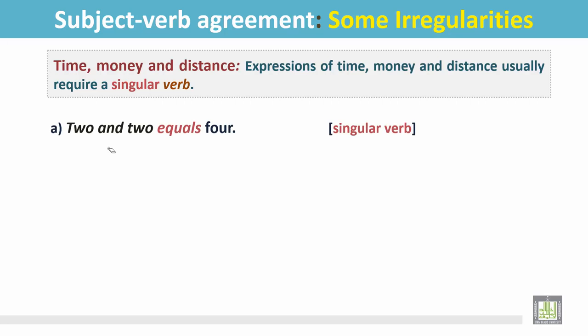There are other examples too. 2 and 2 equals 4. We know this is the mathematical term, 2 and 2 equals 4, either by multiplication or by addition. It is a singular subject, so the verb is singular: equals.